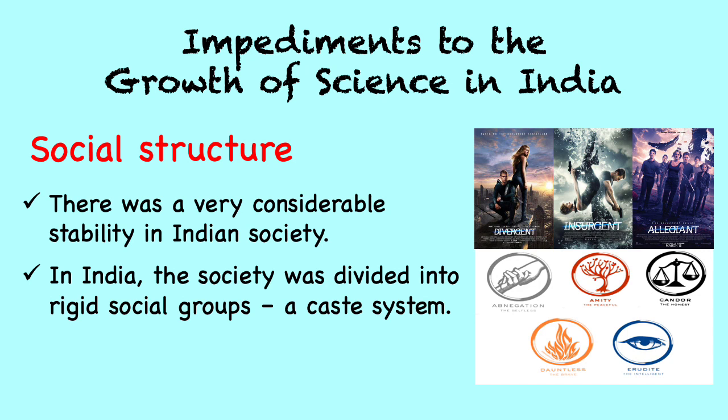A caste is a form of social stratification in which, particularly in India, the society was divided into rigid social groups. What I'd like to emphasize is that social stability and stagnation can easily go hand in hand. The rich had no need for change while the poor had no power to bring about change.